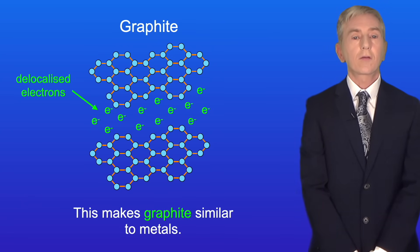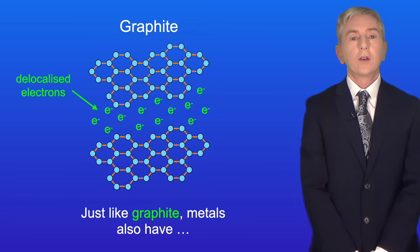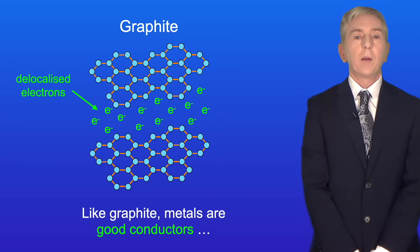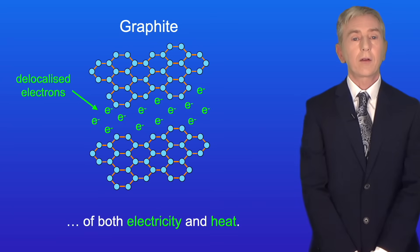Now this makes graphite similar to metals. Just like graphite, metals also have delocalized electrons that can move. And like graphite, metals are good conductors of both electricity and heat.